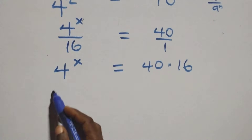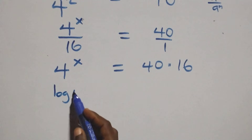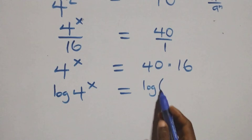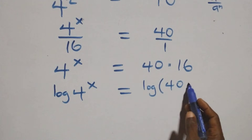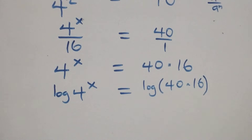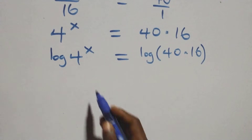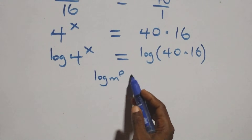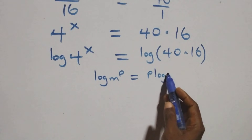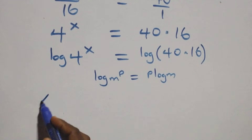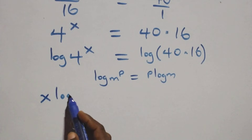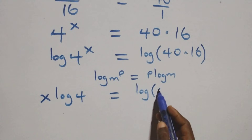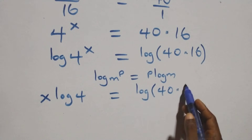Next, we take the log on both sides: log of 4 to power x equals log of 40 times 16. Applying the power log rule — where log n to power p is the same as p log n — we get x log 4 equals log(40 times 16).